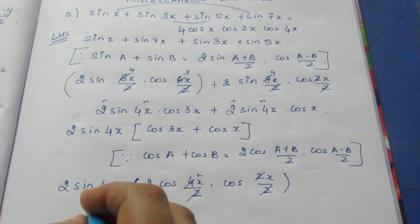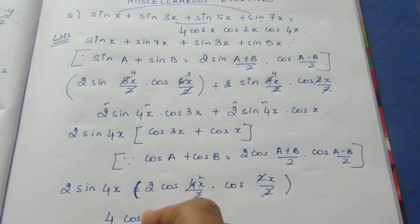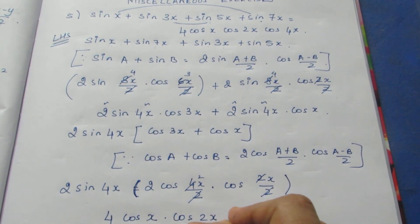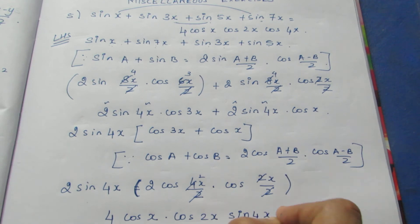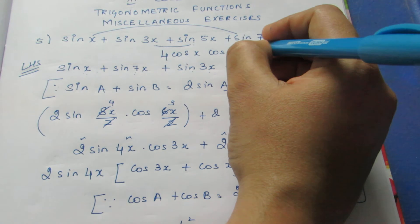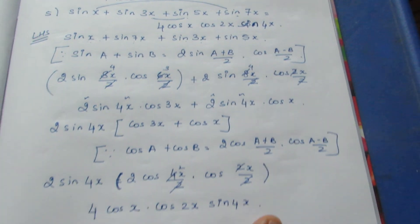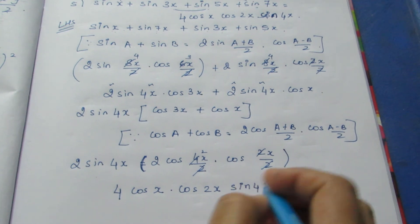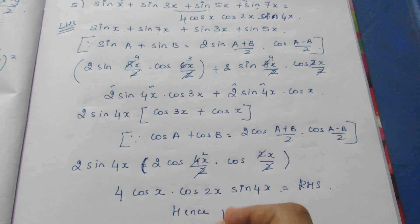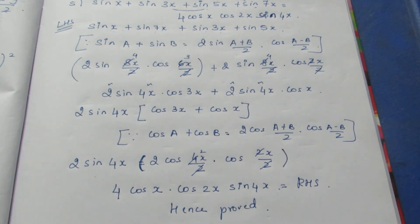After cancellation, the 2 and 2 give 4, so the result is 4 cos x · cos 2x · sin 4x. I should note the question should have sin 4x instead of cos 4x on the right-hand side. We have proved the expression equals our RHS, so the proof is complete. That's all with the sum. Thank you.